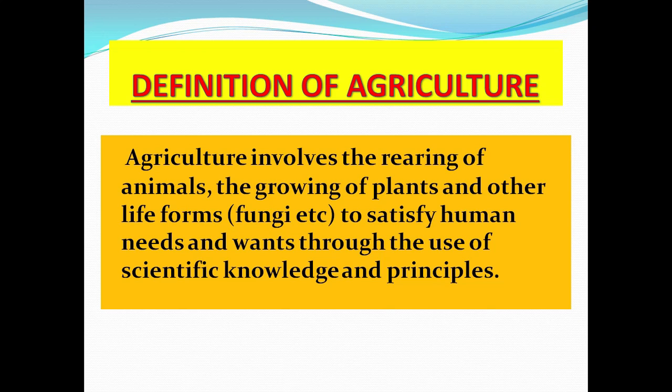An important note from the definition: the word 'rearing' is used to describe animals, while 'growing' or 'cultivation' is used to describe plants. When writing or reading the definition of agriculture, it is appropriate to say 'rearing of animals,' and for crops we say 'growing of crops' or 'cultivation of crops.'